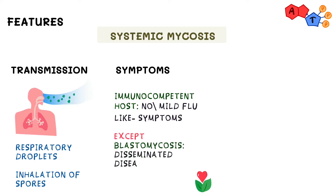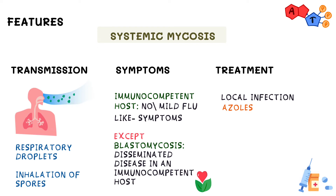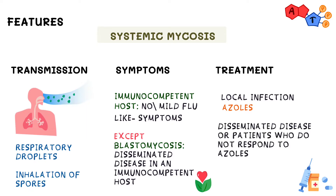However, the exception to this rule is blastomycosis, which can present with disseminated disease in an immunocompetent host as well. When treating patients infected by these fungi, for local infections we usually treat with drugs belonging to the class of azoles. For disseminated disease or patients who don't respond to initial azole therapy, we treat with IV amphotericin B.